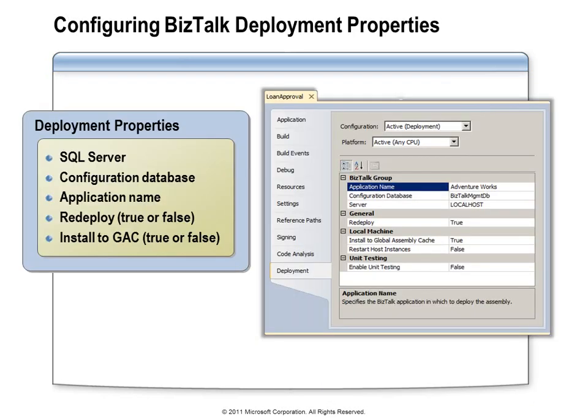The second step listed in the deployment sequence is to configure the deployment properties on each of our BizTalk projects. To do that, you'll need to visit the properties window for each project and then click on the deployment tab. You'll need to provide the information that Visual Studio will need to connect to the BizTalk management database. The property at the top, which is called application name, allows you to assign this assembly to a BizTalk application. If that BizTalk application does not already exist, it will be created when this assembly is deployed.